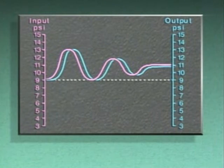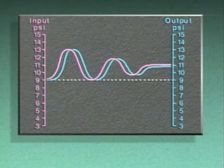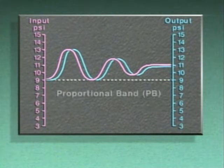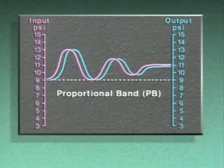However, a controller adjustment can sometimes be made to change the amount of offset. This adjustment affects what is known as the proportional band, or PB.